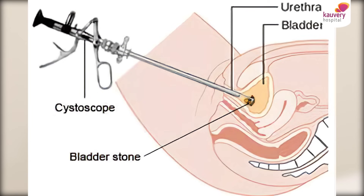In PCNL, a small incision is made in the back; endoscopically we go into the kidney, completely powder the stone, and place a stent. For bladder stones, we also go in endoscopically and remove them. Extremely large stones can also be removed from the bladder using endoscopy.